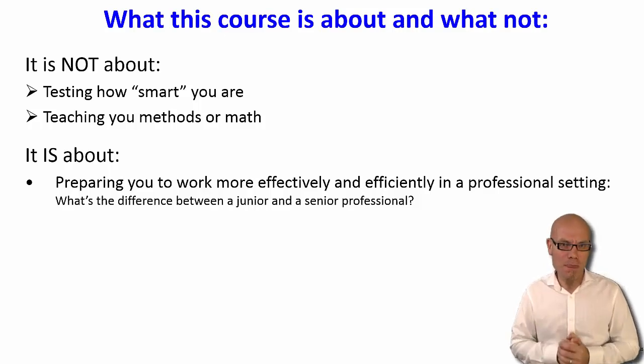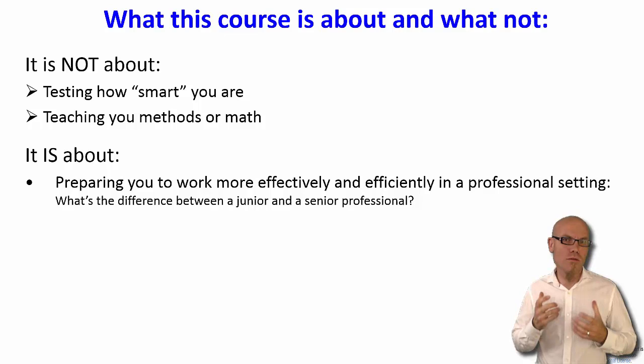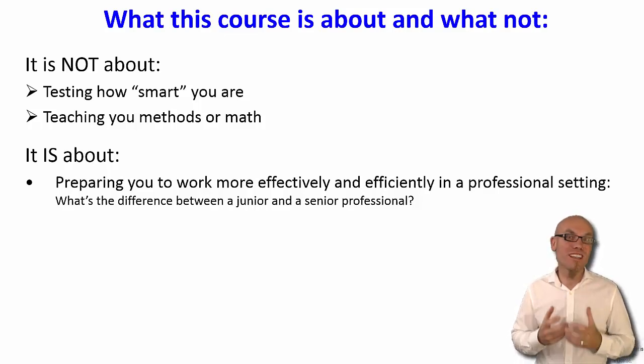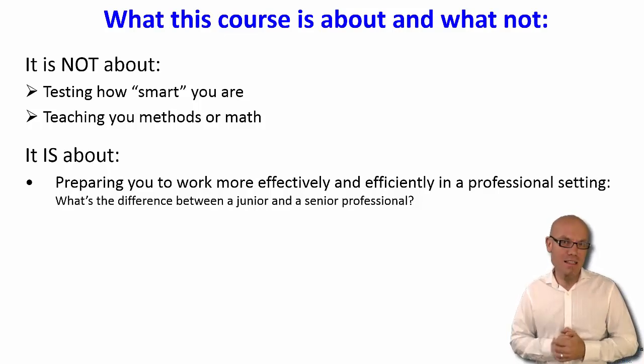Well, often because the senior is also worth more. They can do the same amount of work — sometimes even in better quality — in less time. That's why the boss is willing to pay this person more. Why can the senior do more work and sometimes even better work than the junior in the same or even less amount of time?